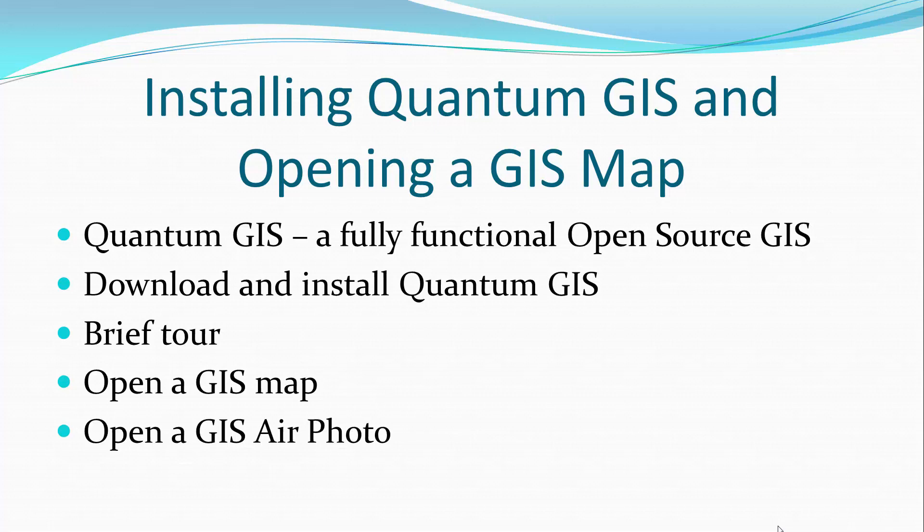We're going to download and install QuantumGIS and I'm going to show you how to do that. I'll give you a brief tour, and then we're going to open a vector GIS map — a map of property outlines — and we're also going to open a GIS air photo. Okay, I will see you inside.